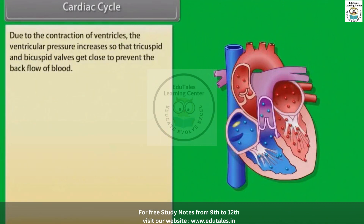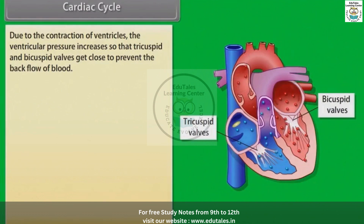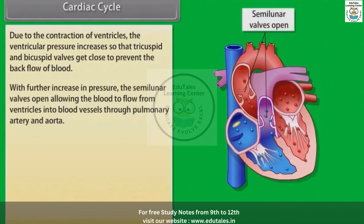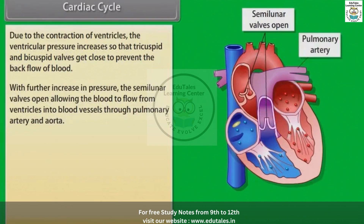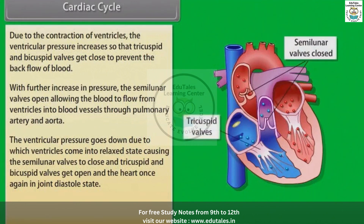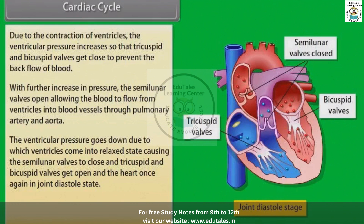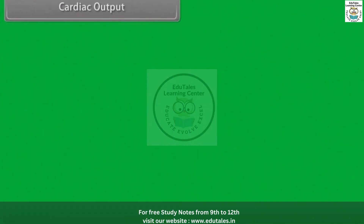Due to the contraction of ventricles, ventricular pressure increases so that the tricuspid and bicuspid valves close to prevent backflow of blood. With further increase in pressure, the semilunar valves open, allowing blood to flow from the ventricles into blood vessels through the pulmonary artery and aorta. The ventricular pressure then goes down, causing the ventricles to relax, the semilunar valves to close, and the tricuspid and bicuspid valves to open — bringing the heart once again to joint diastole. The sequential events in a heartbeat are called the cardiac cycle.